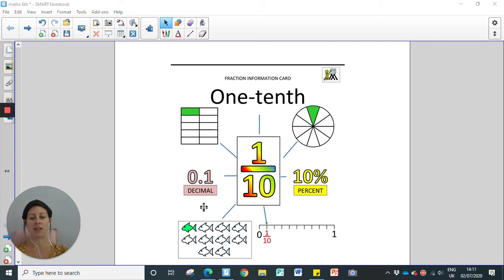And then finally you can see that we have a decimal, and we would read that decimal as 0.1, which is the same as one tenth.